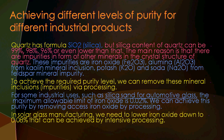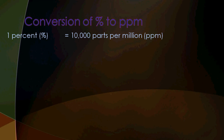To achieve the required purity level, we can remove mineral inclusions and impurities via processing. For example, silica sand for automotive glass has a maximum allowable iron oxide limit of 0.02%, achievable by processing. For solar glass manufacturing, iron oxide must be lowered to 0.008%, which requires intensive processing.